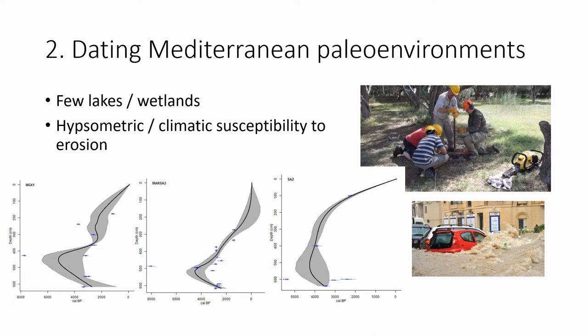Problem two: Mediterranean environments pose quite significant problems for paleoenvironmental dating. In northern Europe we have lakes, bogs, and wetland sites providing good archives of environmental information. In the Mediterranean, lakes and wetlands exist but aren't as commonplace and have quite a lot of problems — because of the steep hypsometry (the shape of the Mediterranean landform in many places), the erodability of the soil, and the seasonal weather. When it rains in the Mediterranean it rains heavily, causing flooding and hillwash. So our paleoenvironmental sequences tend to be incredibly difficult to date using standard techniques.